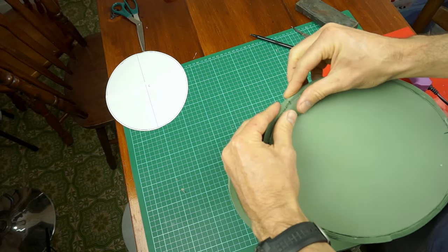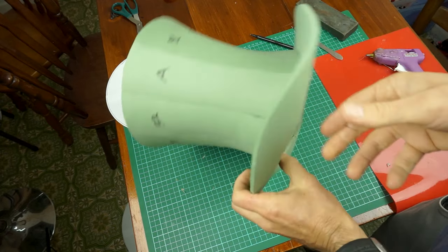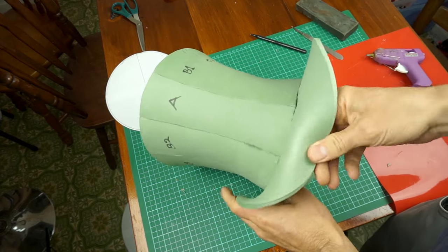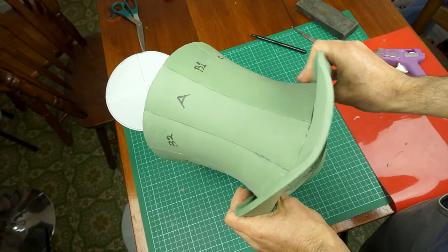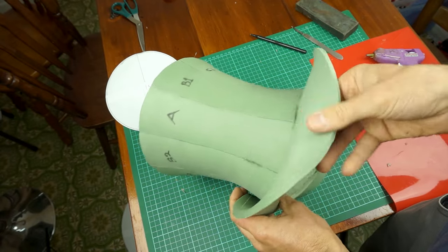Lastly, you can heat up the brim with a blow dryer and curve it into the shape that you would like. Just be careful not to melt the hot glue or you'll be starting over.